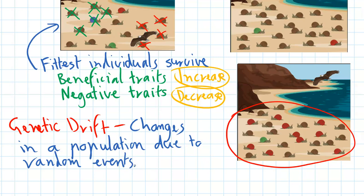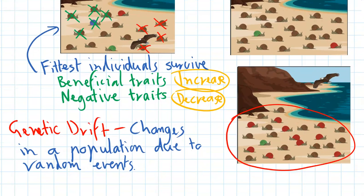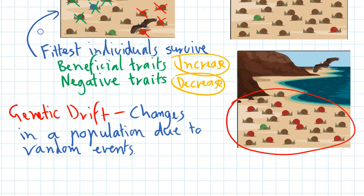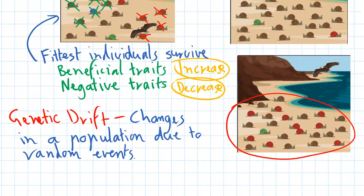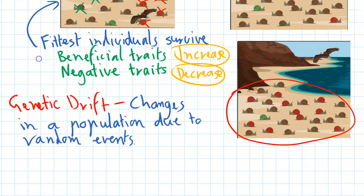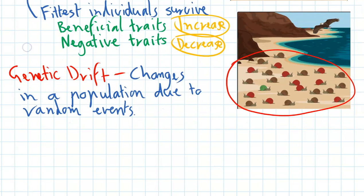It's changes in a population due to random events. You can have natural disasters like floods and bushfires, you can have diseases that kill random individuals, just like coronavirus happens to target random people who are unfortunate. That means that random individuals might increase and certain traits will increase even if they're not the fittest.